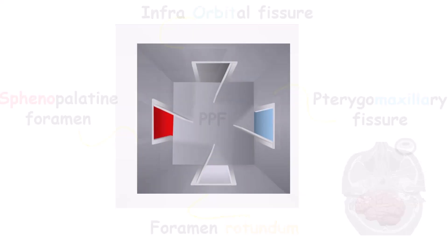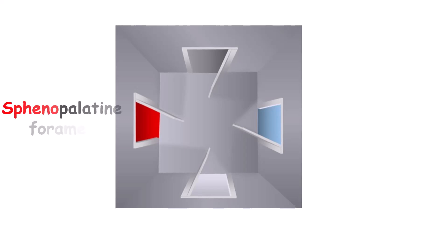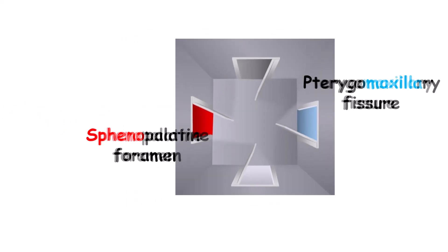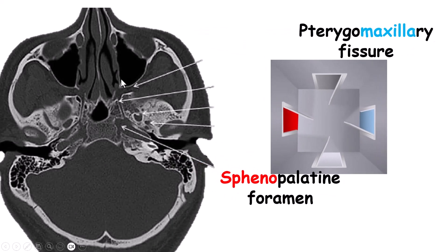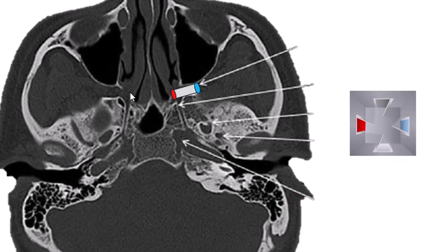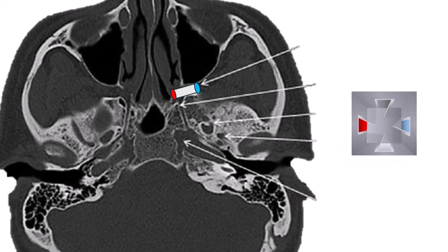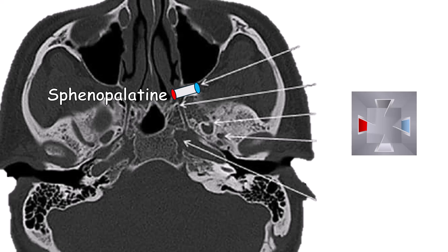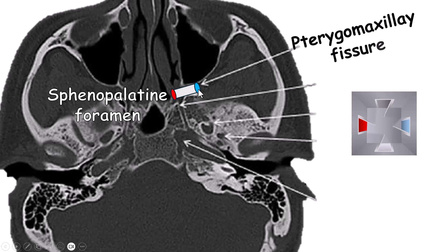Let's start with the medial and lateral openings. The sphenopalatine foramen and pterygomaxillary fissure can be seen when the walls of the posterior maxillary sinus and the pterygoid plates are parallel — they look like two round openings of a cylinder, with the cylinder being the pterygopalatine fossa itself. Their names tell you which side of the cylinder they are. The sphenopalatine foramen opens in the direction of the sphenoid body or sphenoid sinus, so it's the medial opening. The pterygomaxillary fissure opens towards the maxillary sinus, which stretches out laterally towards the zygomatic arch, so it is the lateral opening.